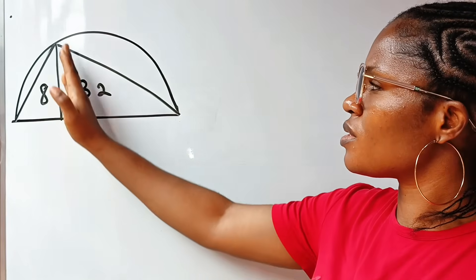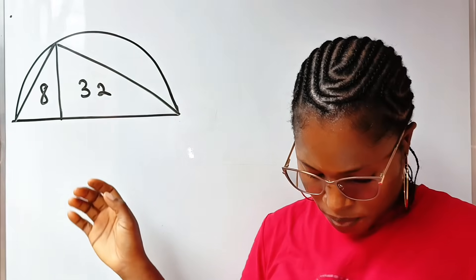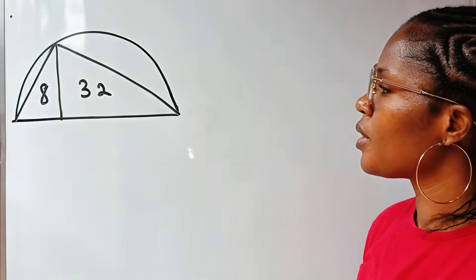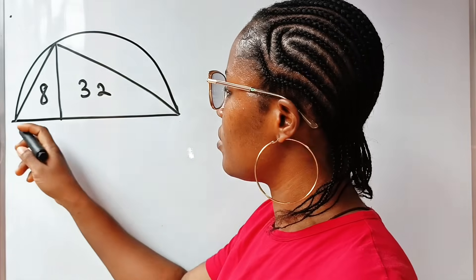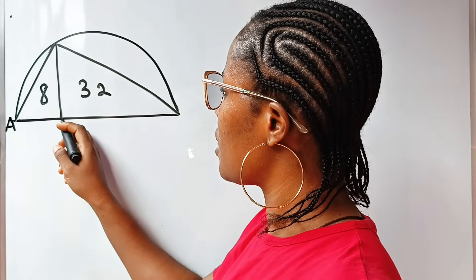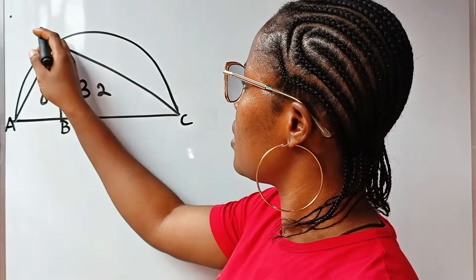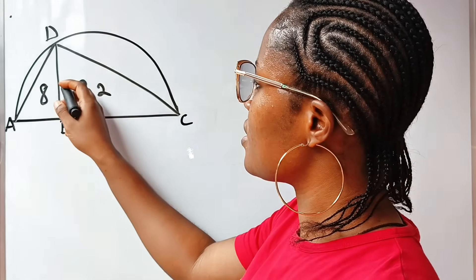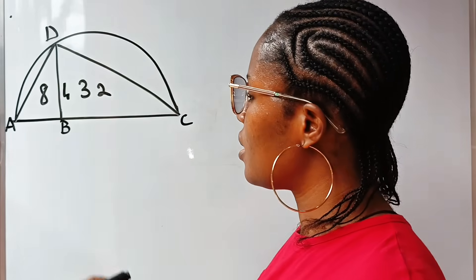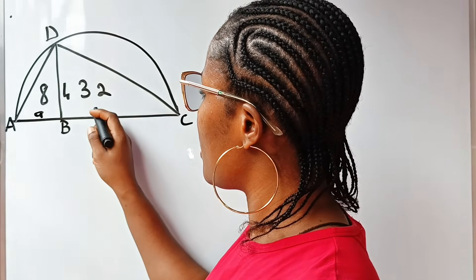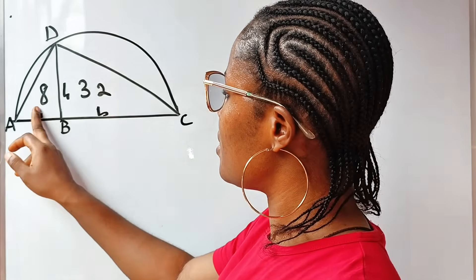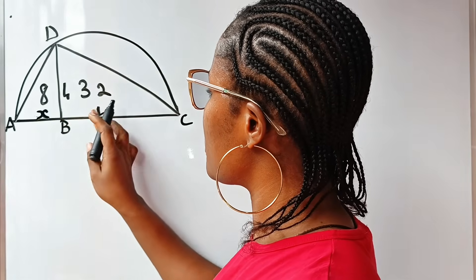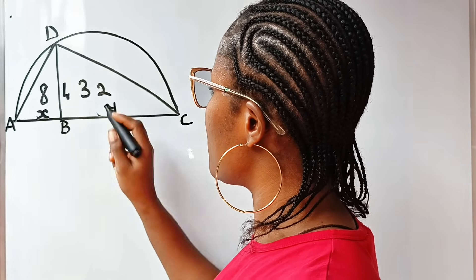The two triangles share the same height. This is not drawn to scale. So first let's name them. Let's call this A, call this B, call this C, and call this D. Now the height, let's call the height H. Let's call this place X and this place Y.